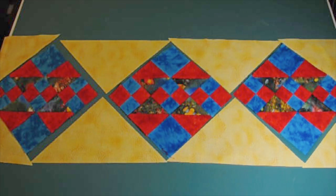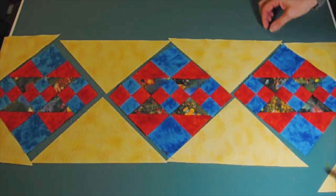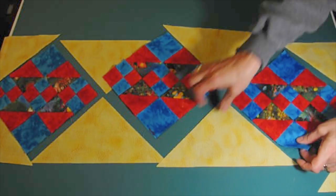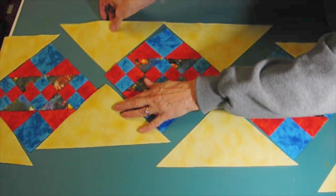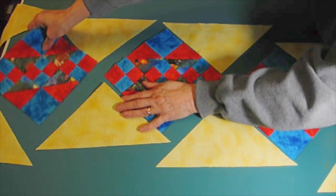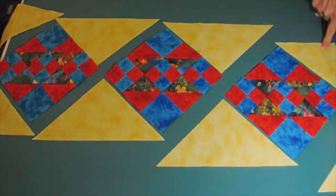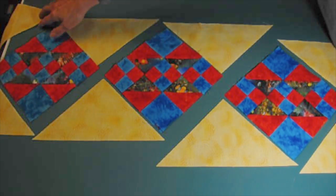Here you see I have the blocks and the setting triangles lined up for this table runner. If you were making a large quilt, you would have several blocks in between each of those setting triangles. The way to sew them together now is to look at them as diagonal rows. So I'm separating them so you can see the rows more easily. They look like they're on the diagonal, but of course they're all straight seams, and so there's your diagonal rows, and that's the way you will start to sew them together.